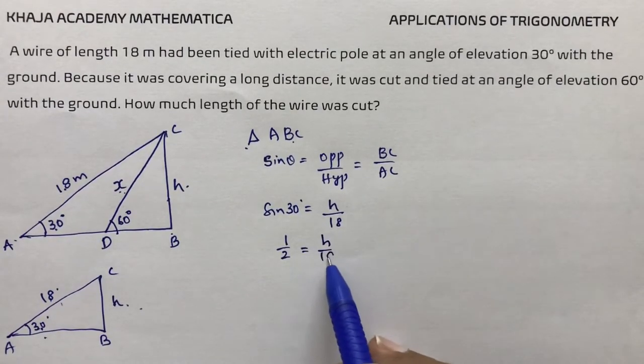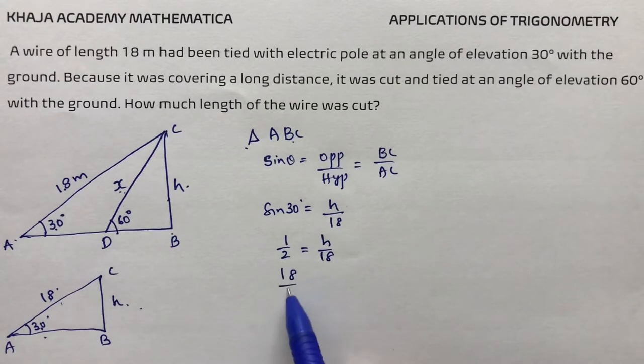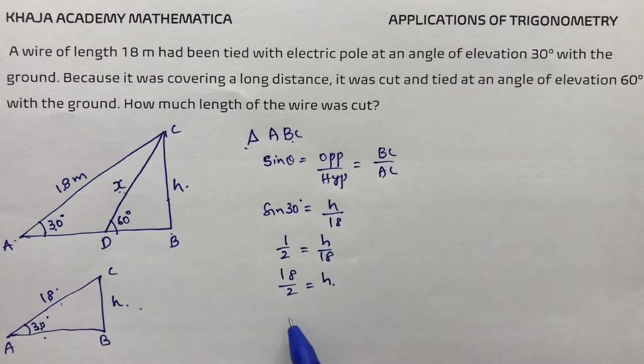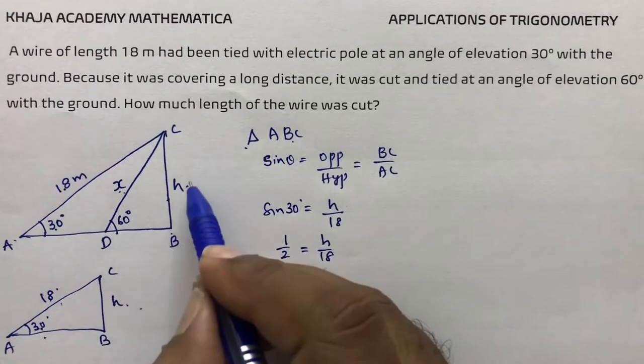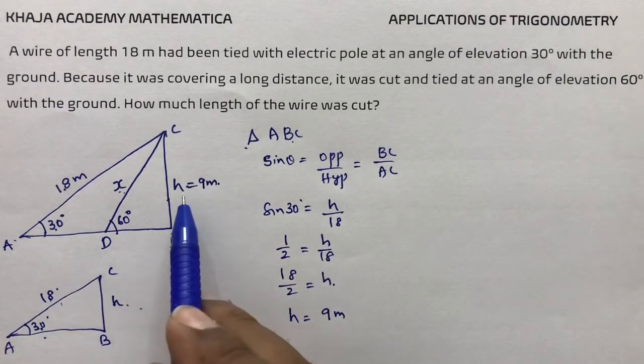Cross multiplying, 18 divided by 2 equals H. So H equals 9 meters. The height is 9 meters.